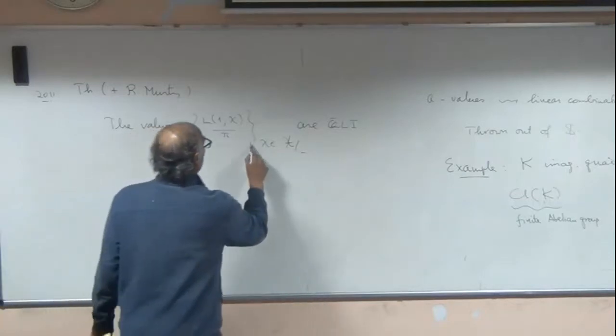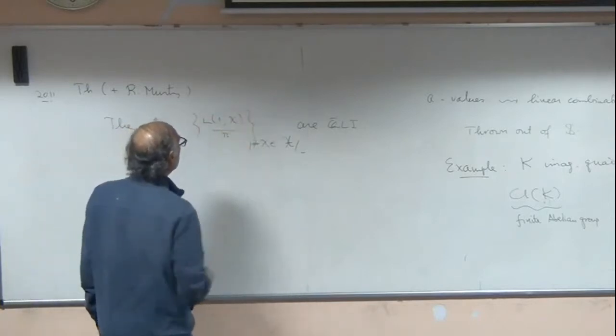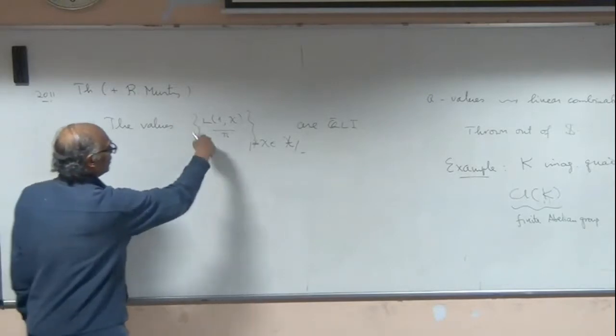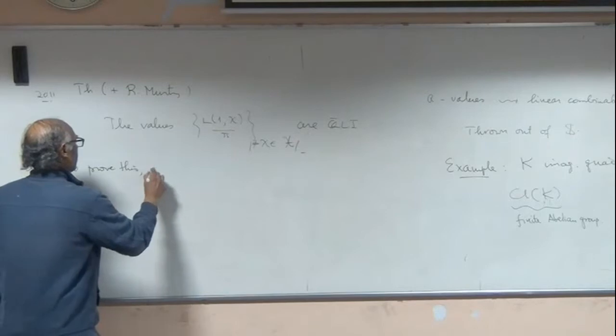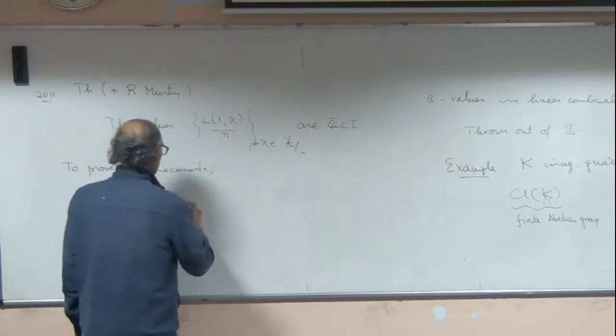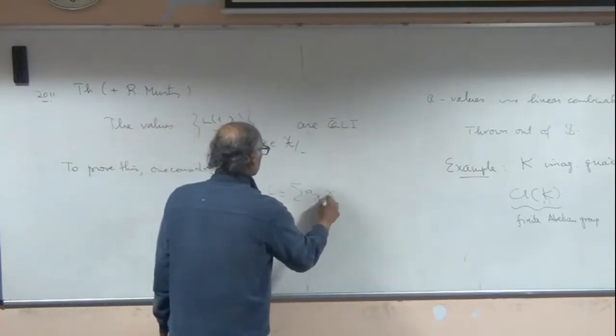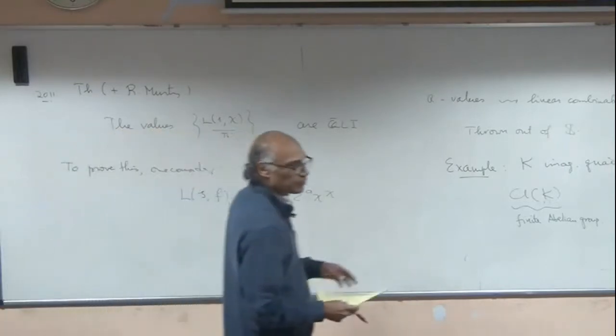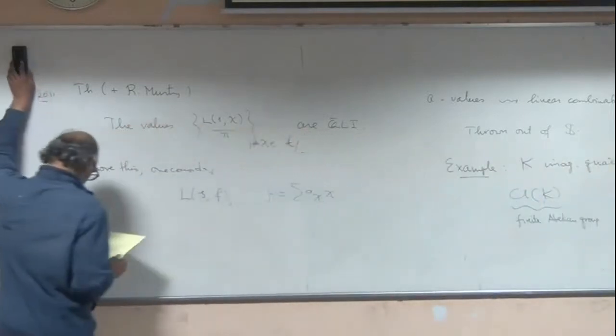And to do this, this is an interesting statement about linear independence of special values, normalized special values of L-functions. This is still transcendental. And to prove this, one considers Dirichlet series which we might call F_F, where F is some linear combination of these chi. So immediately, again, another instance where you are thrown out of the Selberg class.